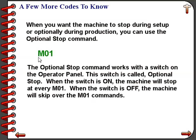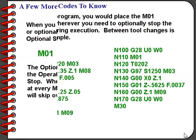For an optional stop, we have the optional stop command M01. On the operator panel, look for a switch called optional stop. When that switch is turned on and M01 is executed, the machine will stop execution, allowing a setup person or operator to open the door and check on something. If the switch is turned off and M01 is executed, nothing happens — it is basically just skipped over.